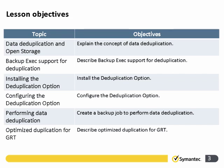This is an additional option that must be licensed and installed. When you install this option, it adds services to the Backup Exec server. Once installed, you need to configure a data deduplication destination. We'll look at how to create a backup job that performs data deduplication, and we'll talk about optimized duplication for deduplicated data — how to send deduplicated data from one site to another with minimal network traffic.